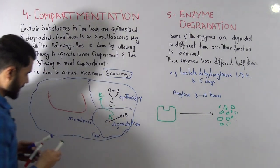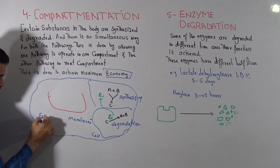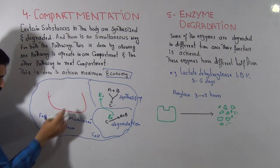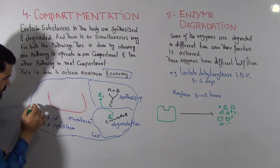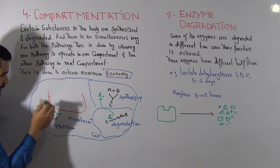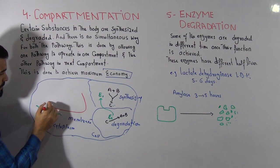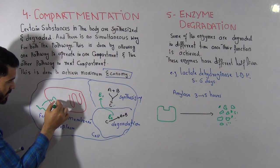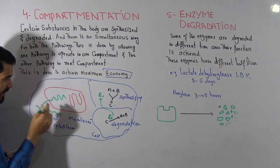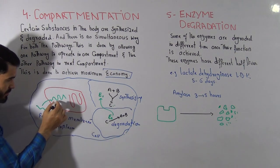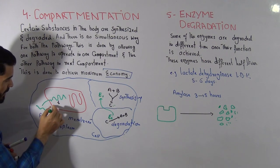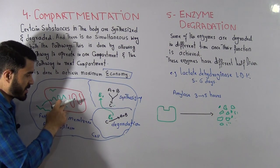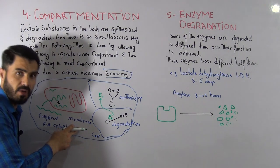A good example is fatty acids. Fatty acids are synthesized in the cytoplasm. This long-chain fatty acid then enters the mitochondria, and inside the mitochondria it is degraded by beta-oxidation. So degradation is done in the mitochondria and synthesis is done in the cytoplasm — these are two separate compartments. This is done for economy purposes.